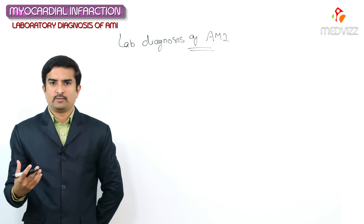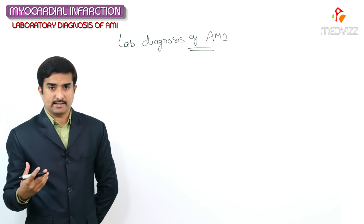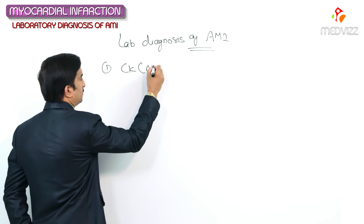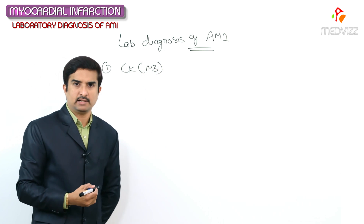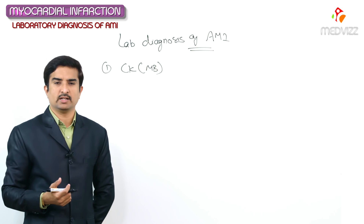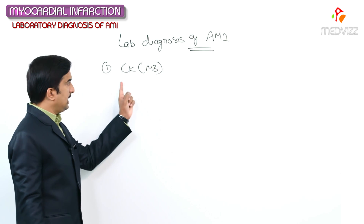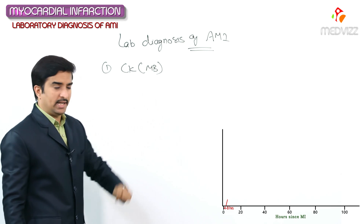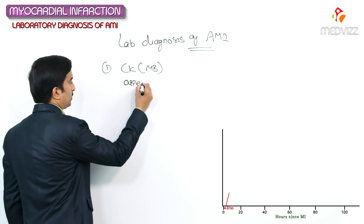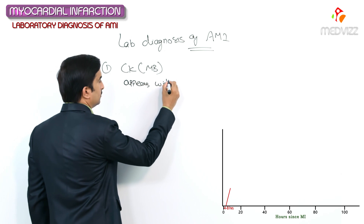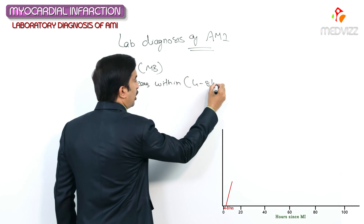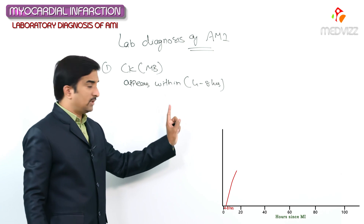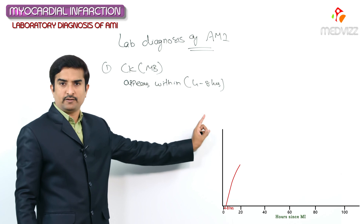Our topic is the laboratory diagnosis of acute myocardial infarction. The first test is serial testing for the creatinine kinase isoenzyme, called CKMB, which is specific for cardiac muscle but may also be produced from different sites. CKMB appears within four to eight hours after infarction.